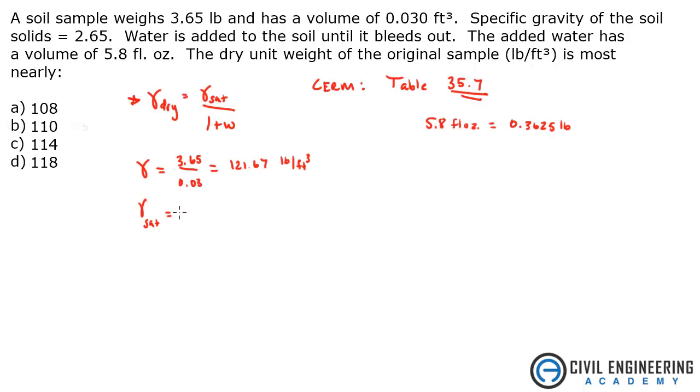If you did it by volume, I'm not sure how you can do that. I did it by weight. So we take the original soil sample and we add the water, divide that by the volume, and that gives us a gamma sat of 133.75.